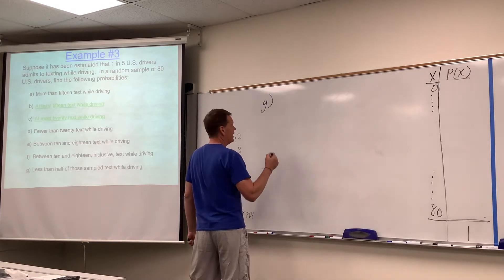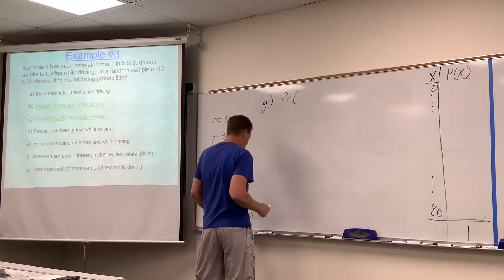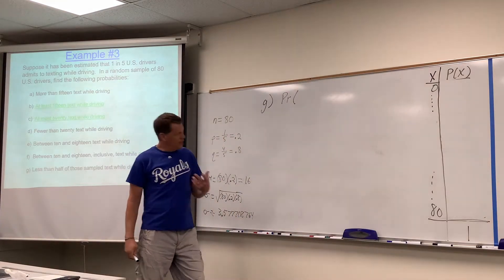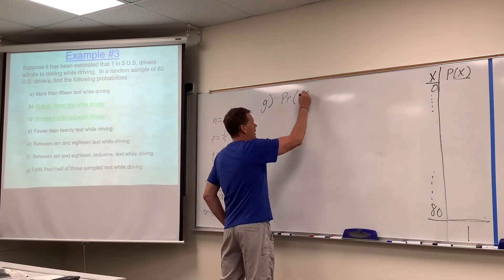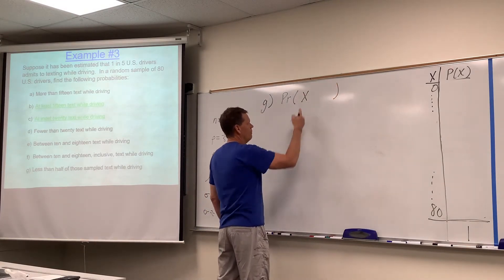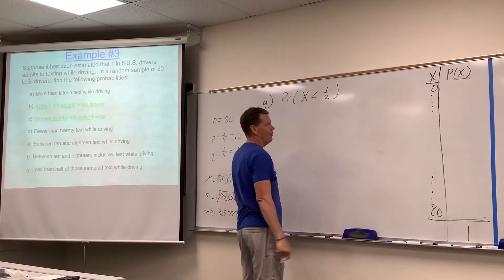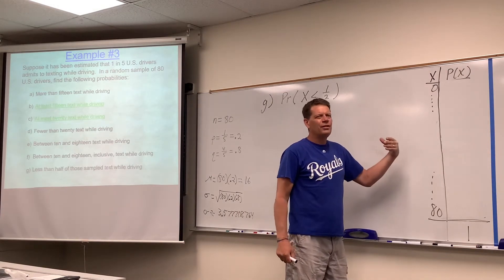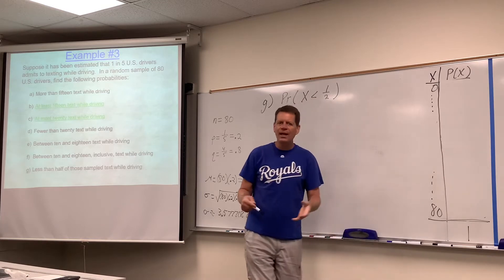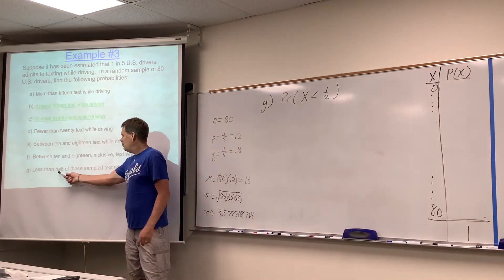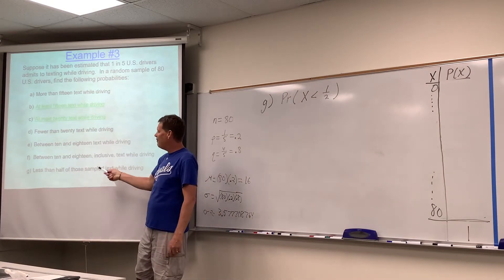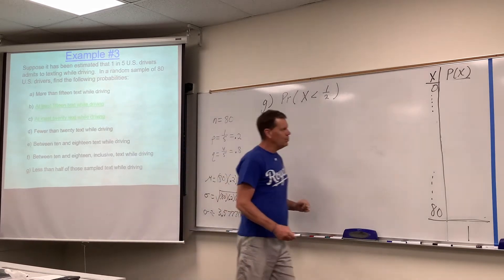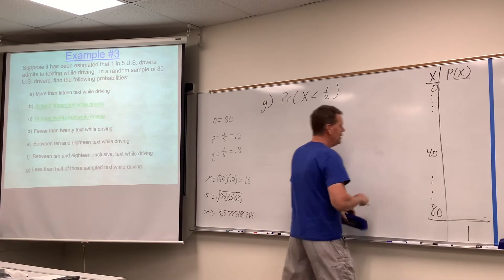We've surveyed 80 drivers and asked them whether they text while driving. The question is: what's the probability that less than half of those sampled text while driving? When people read this, many say the variable x is less than a half. But you can't have half a person - it's saying less than half of those sampled. There were 80 people sampled, so one half of 80 is 40 people.